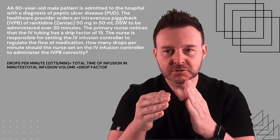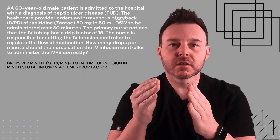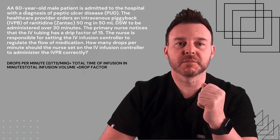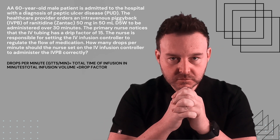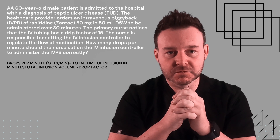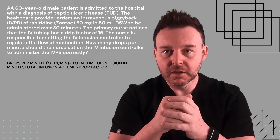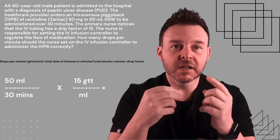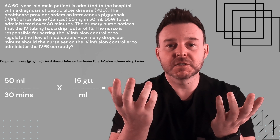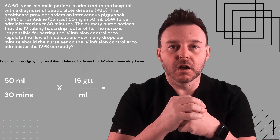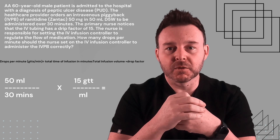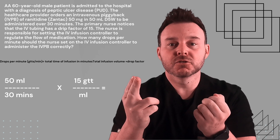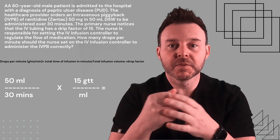The formula is: drops per minute = (infusion volume × drop factor) / total time of infusion in minutes. The problem gives us most of this information. The total time is 30 minutes, the Zantac is in 50 mL, and the IV tubing drip factor is 15 drops per mL.